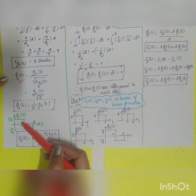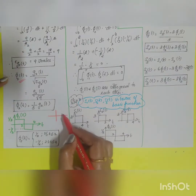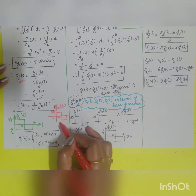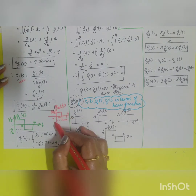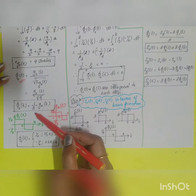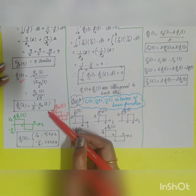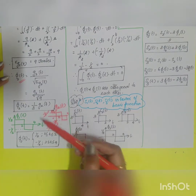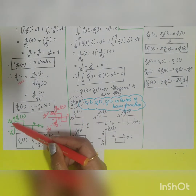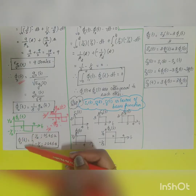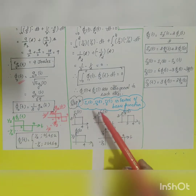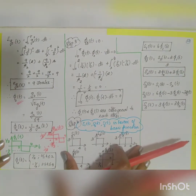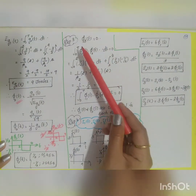Drawing φ₂(t) = (1/3)·g₂(t): multiply each amplitude by 1/3. For 0 to 2: (1/3)×(3/2) = 1/2; for 2 to 4: (1/3)×(−3/2) = −1/2. So φ₂(t) = 1/2 for 0 ≤ t < 2, and −1/2 for 2 ≤ t ≤ 4.